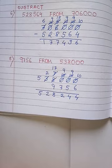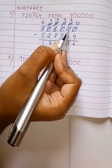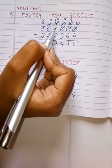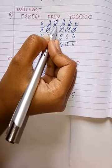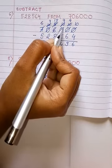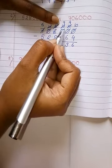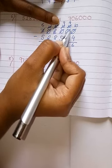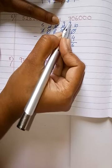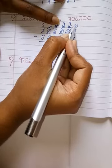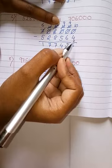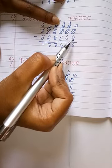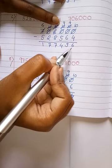When we are subtracting these two numbers, the first three digits are 0. So we can start from here — start from 6. Write down 6 as 5, then cancel 0, that is 10, then 9. Similarly, 0 means 10, then cancel it to 9. After that, the last 0 becomes 10. Now 10 is greater than 4, so 10 minus 4 equals 6.